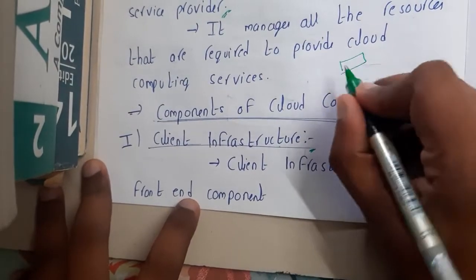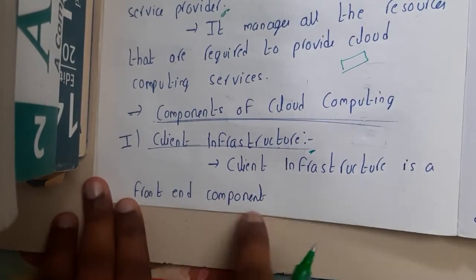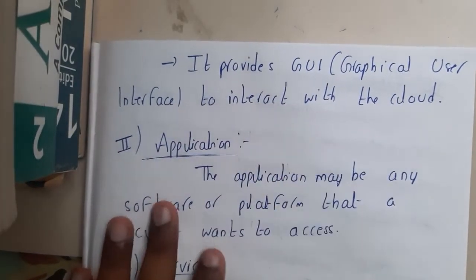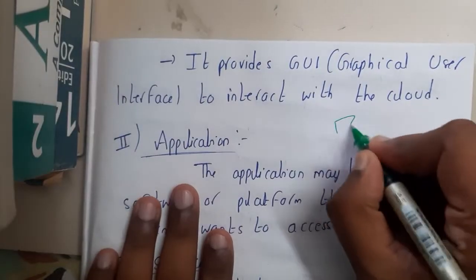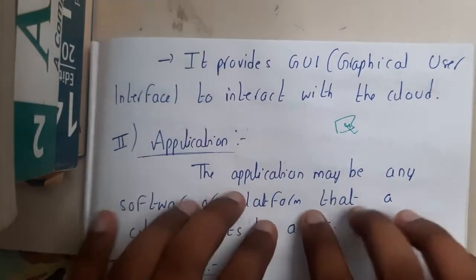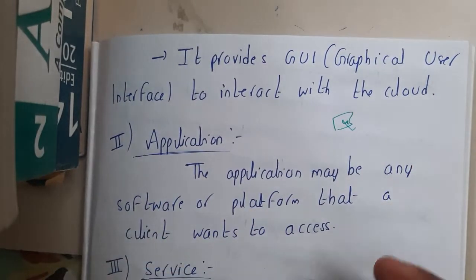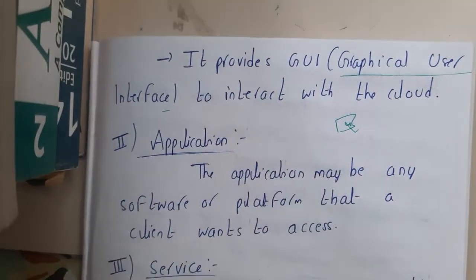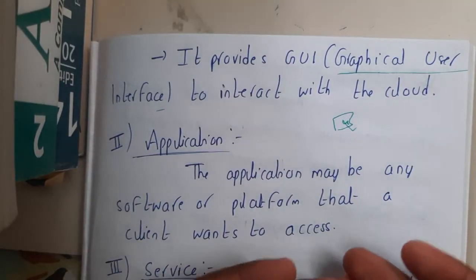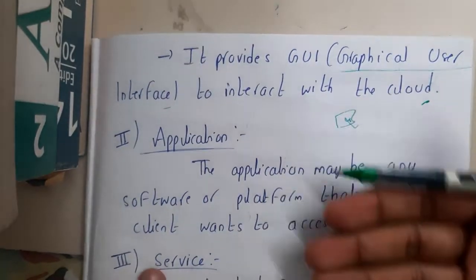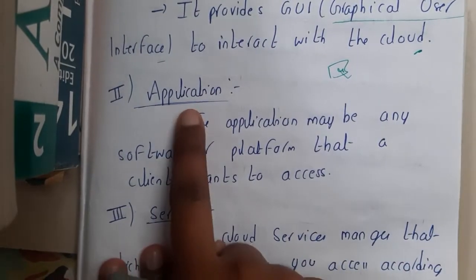The first component is client infrastructure, which is the front end component. It provides a GUI — that is, a graphical user interface — to interact with the cloud. Most websites use graphical user interfaces with icons you can click, because not every user knows coding or the command line. Basically, the website will look similar to how we run an application on our PC or laptop. That is your client infrastructure — the front end which the user sees.